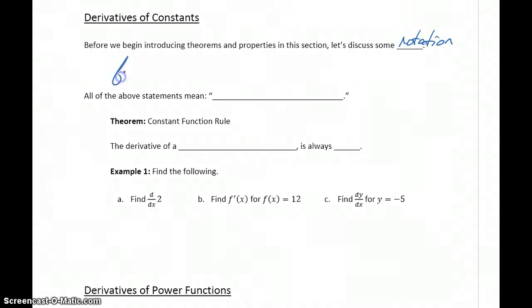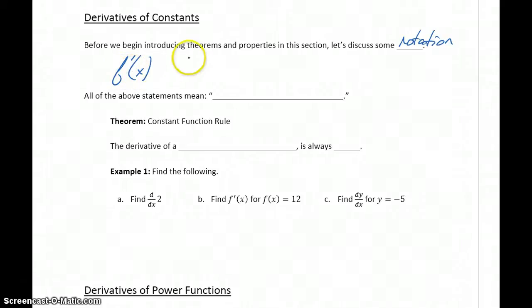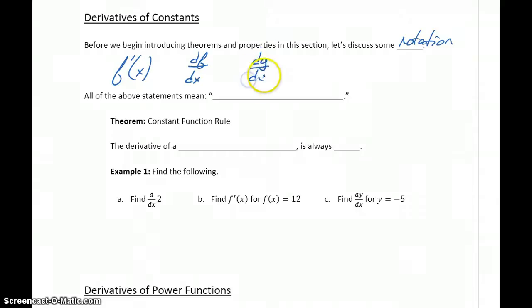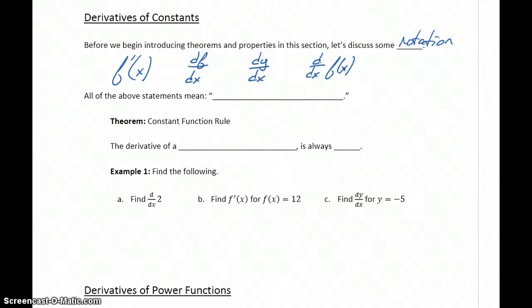One way to do that would be to use the notation f prime of x. So f prime of x means find the derivative of our function f of x. Similarly, for some function f, we could say df over dx, which means take the derivative of our function f with respect to x as the independent variable. If instead of a function f we had an equation y equals something, we could write dy over dx. Or we could simply put the d over dx notation out in front of our function.